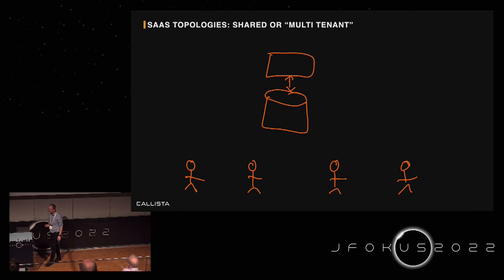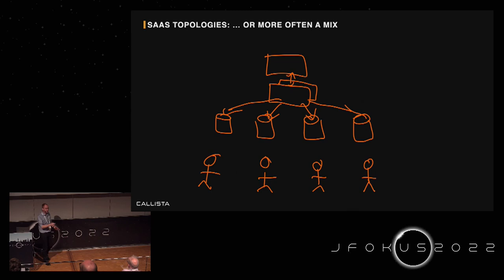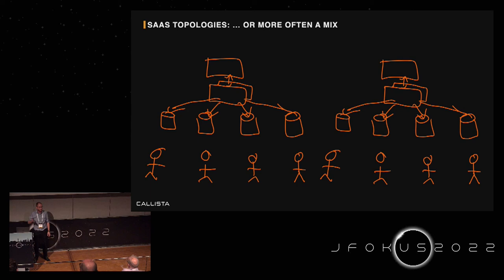The sweet spot is of course somewhere in the middle, where you share some parts and use dedicated resources for other parts — for instance, sharding in different regions.